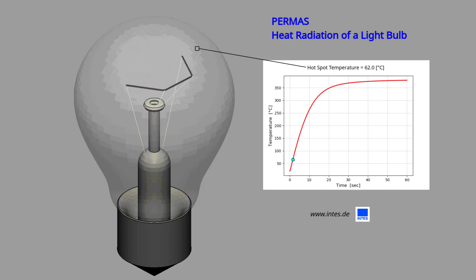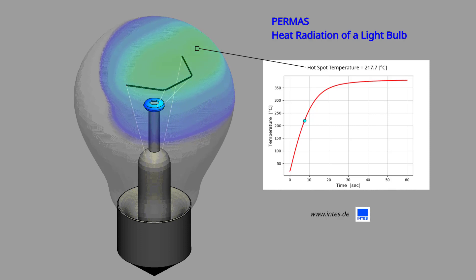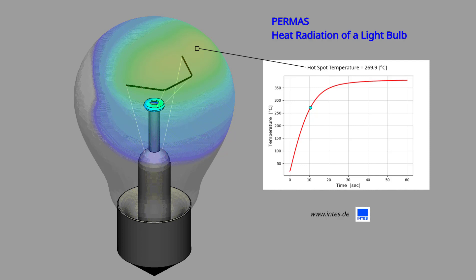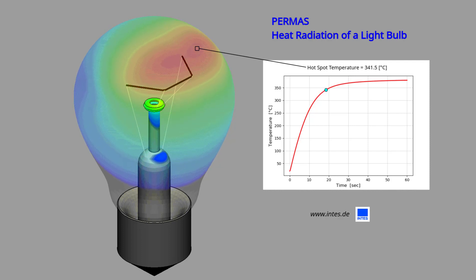PERMAS technology — heat radiation shown on a light bulb. In this light bulb example, a heat flow is applied to the filament of a light bulb which radiates at the glass envelope. Heat transport then occurs to the environmental air through radiation and convection.